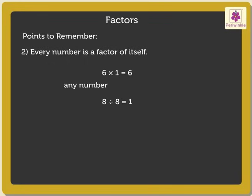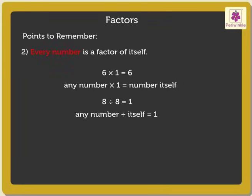Point 2: Any number multiplied by 1 gives the number itself as the product. And any number divided by itself gives 1 as the quotient. Hence, every number is a factor of itself.